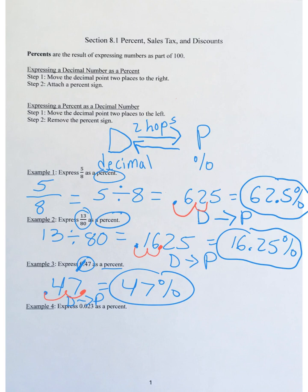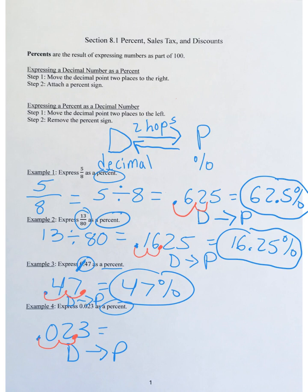Example four: express 0.023 as a percent. Again, slide the decimal point two hops to the right — hop one, hop two lands between the 2 and the 3. This gives you 2.3%. The leading zero can be dropped — final answer: 2.3%.